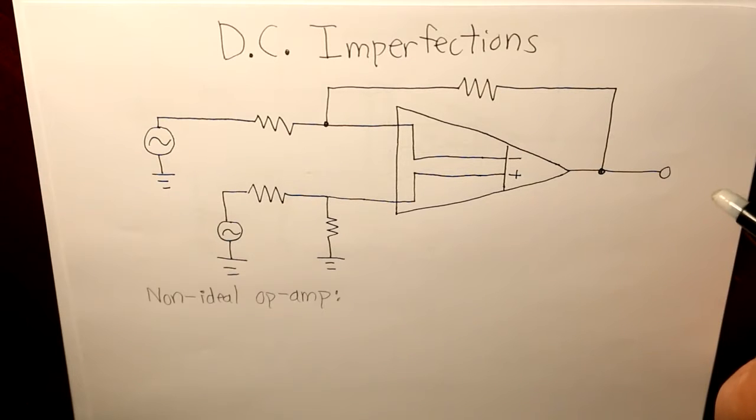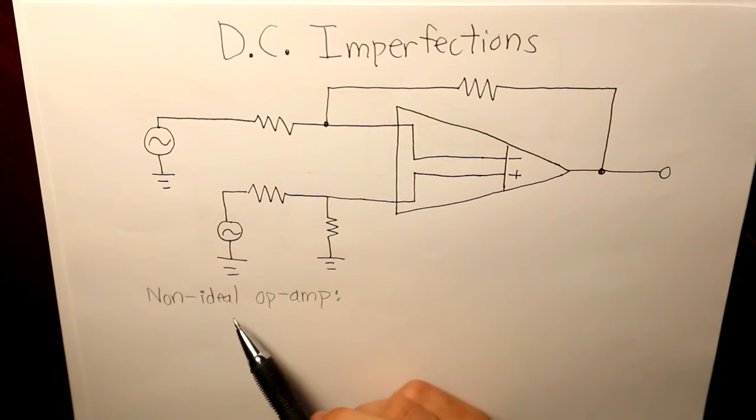Hello everyone, in today's video we are going to be talking about DC imperfections, the component which makes op amps non-ideal.